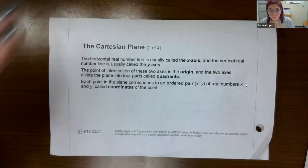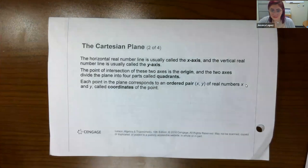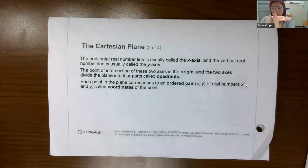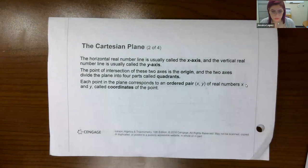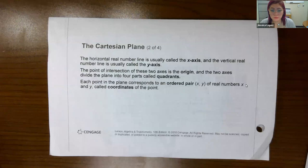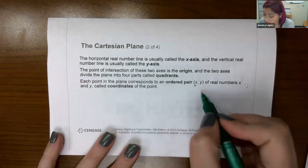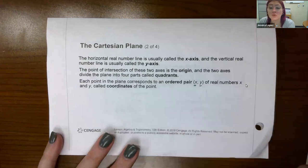A horizontal real number line — the one that goes flat — is called the x-axis. The vertical one, like a wall, is called the y-axis. Where the two intersect in the middle is called the origin, and it breaks everything up into four regions called quadrants. Each point in the plane corresponds to what is called an ordered pair, where x and y are real numbers called the coordinates — the x coordinate and the y coordinate. The order matters: the number in the first spot represents the x value, and the number in the second spot represents the y value.